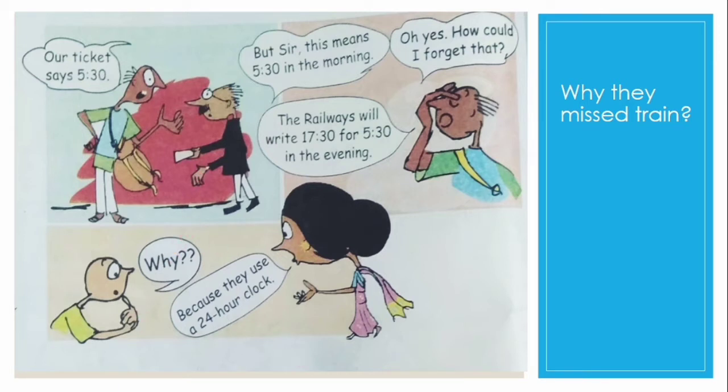Why? Because, mother said, they use a 24 hour clock. In a 12 hour clock, each time comes twice in a day. So 5:30 in the morning is 5:30 AM and 5:30 in the evening is 5:30 PM.